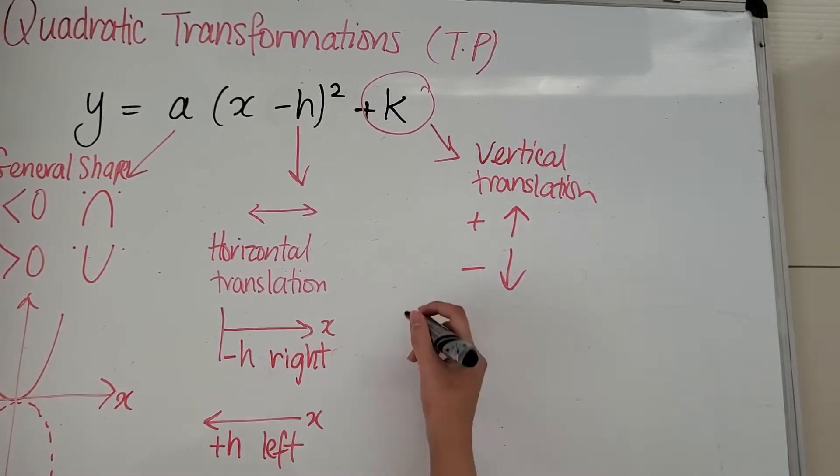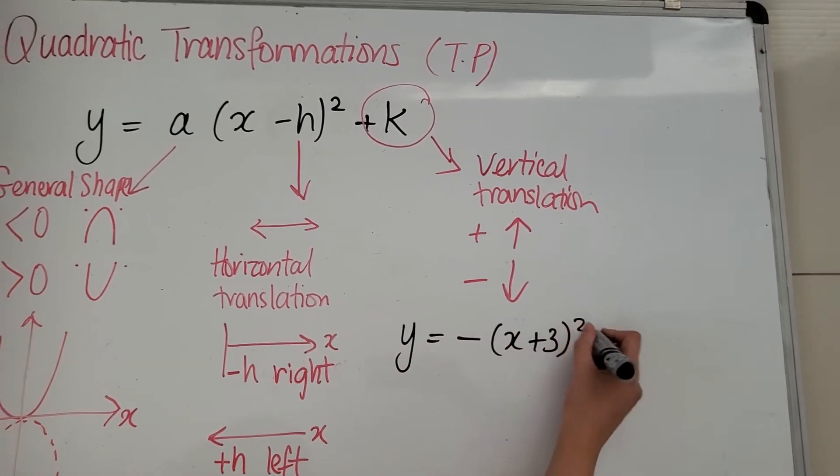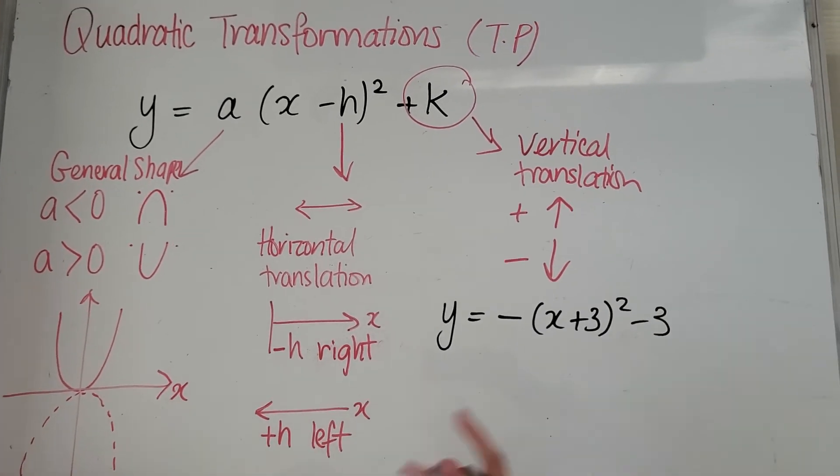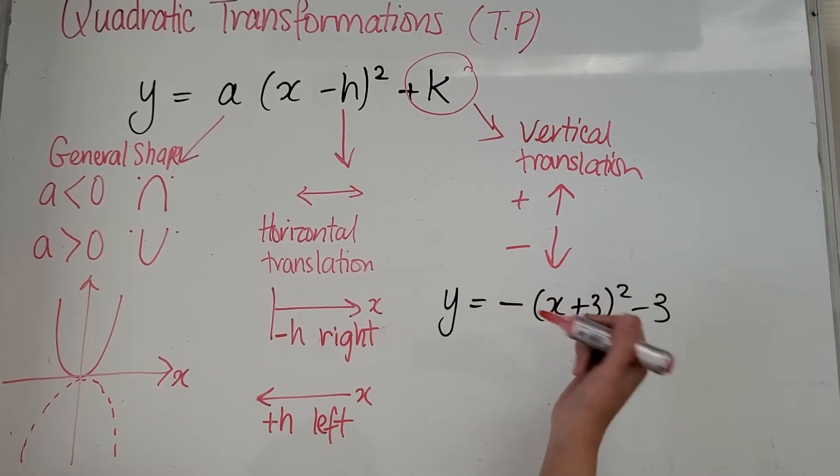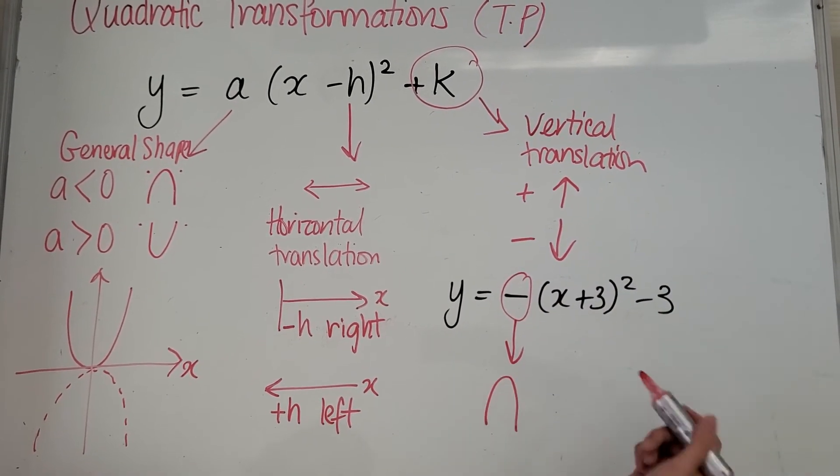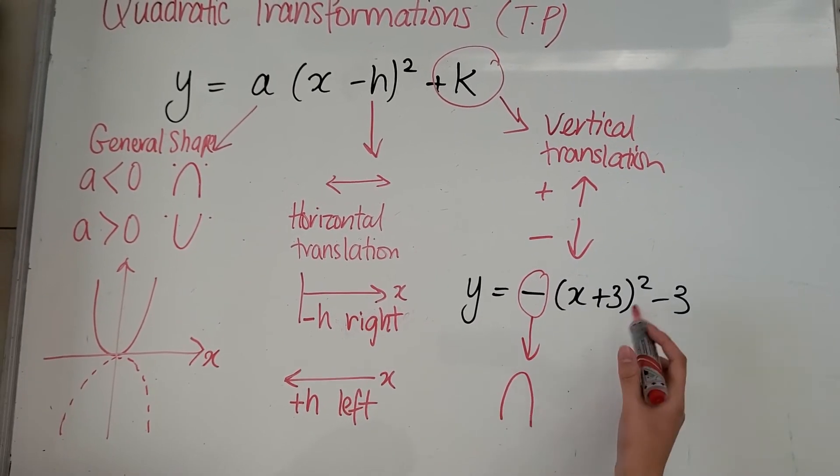An example for that is when a is negative, x plus 3 squared minus 3, in that sense. So have a look first. Go from left to right. Left, there is a negative in front of that bracket, which means it is a sad face. So that's your general shape of it. It's going to look somewhat like that.